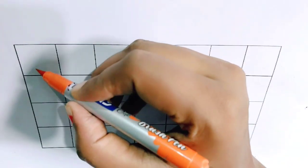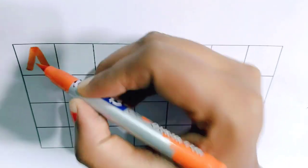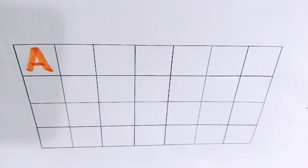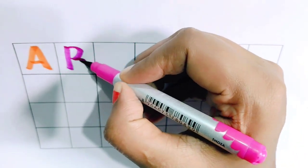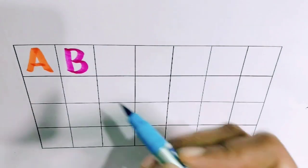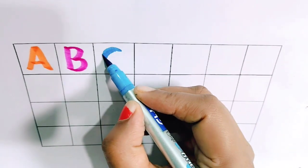A. A for apple. B. B for ball. C for cat.